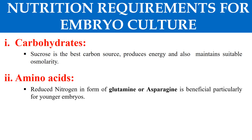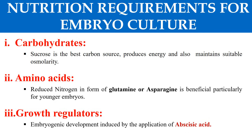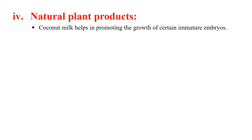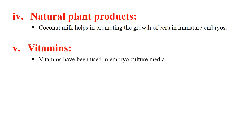The next media requirement is growth regulators. Embryogenic development is induced by the use of abscisic acid in combination with ammonium ions. The next requirement is natural plant products — for example, coconut milk, which is a liquid endosperm, helps promote the growth of certain immature embryos. Vitamins are also essential for the growth of embryos and should also be present in the medium.